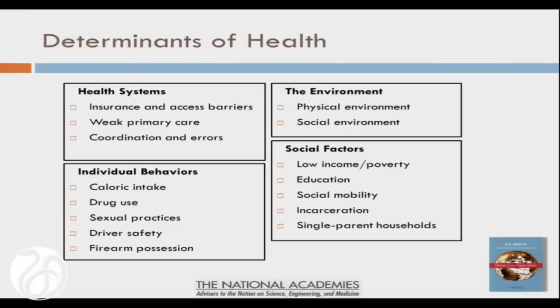We looked at the role of the health system, individual behaviors, the environment, and social factors. What was really stunning to us is that in each of these categories, when we systematically compared the US with other countries, we saw the same pattern of the US falling behind other countries in terms of performance, and that the gap has increased over time. Whether you're talking about child poverty — where we've had the highest child poverty rates compared to other countries since 1980 — or in socioeconomic factors.